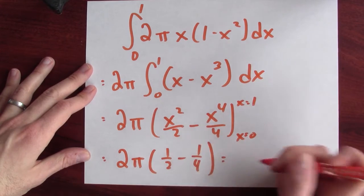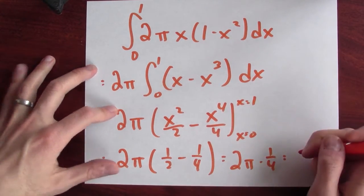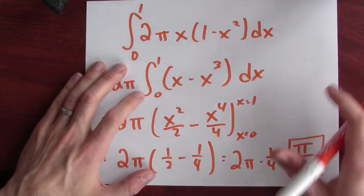And that's 2π times 1 half minus 1 fourth. And 1 half minus 1 fourth is 1 fourth. So 2π times 1 fourth. And 2 times 1 fourth is 1 half. So π over 2 is the volume of my solid of revolution. We did it.